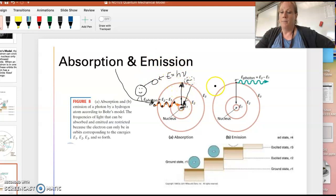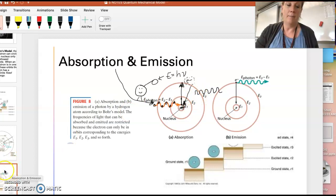And the bigger the jump, the higher the frequency of the energy. And sometimes we can see that. If it's within our visible part of the electromagnetic spectrum, we get to see the color come back. The energy that's emitted comes as a color.